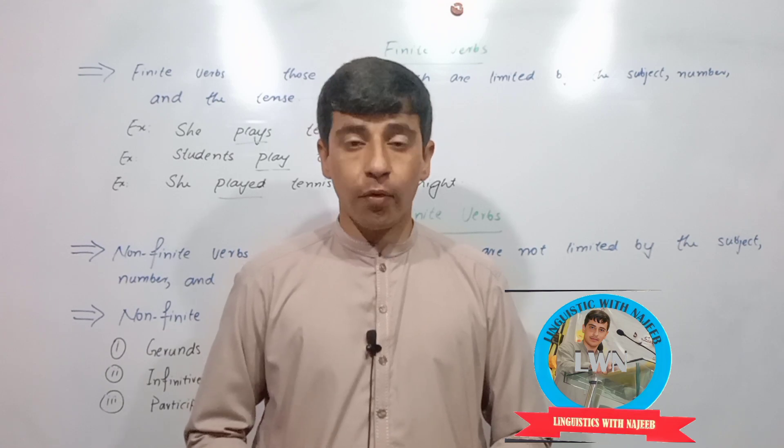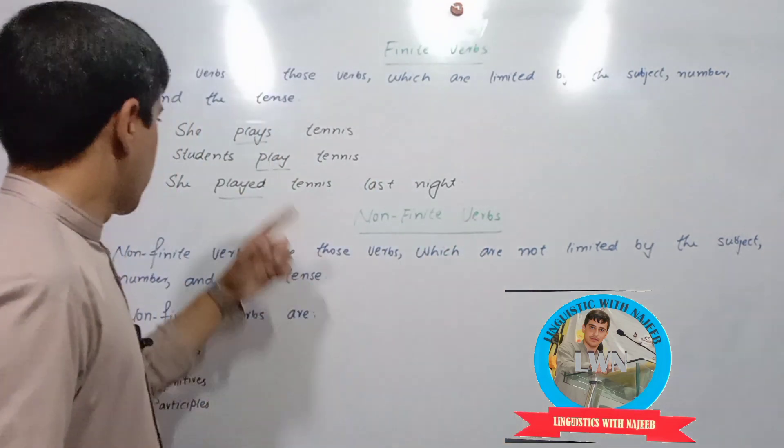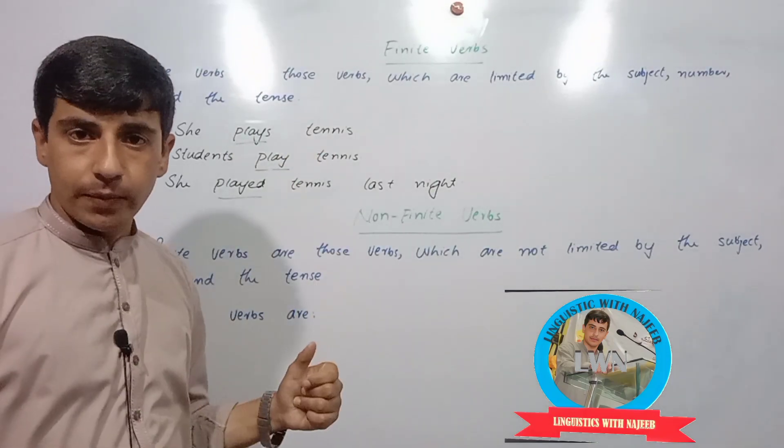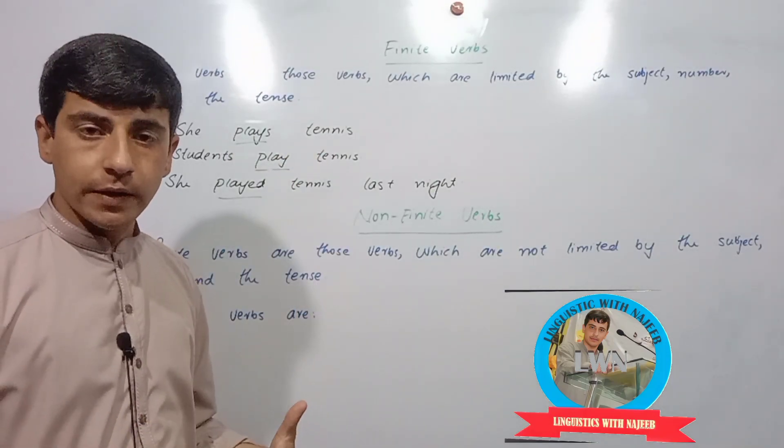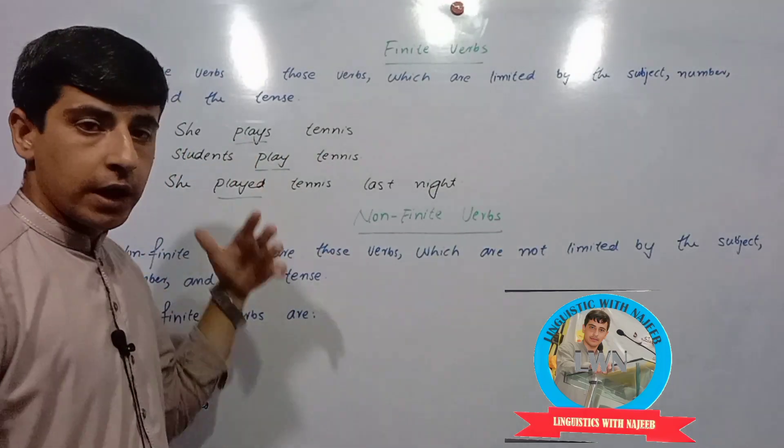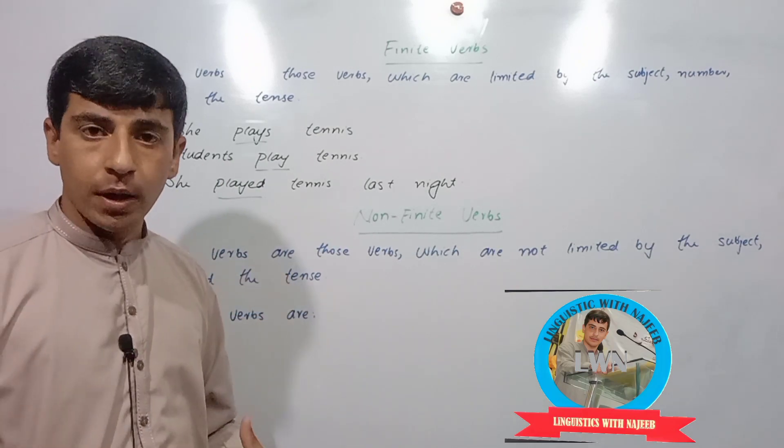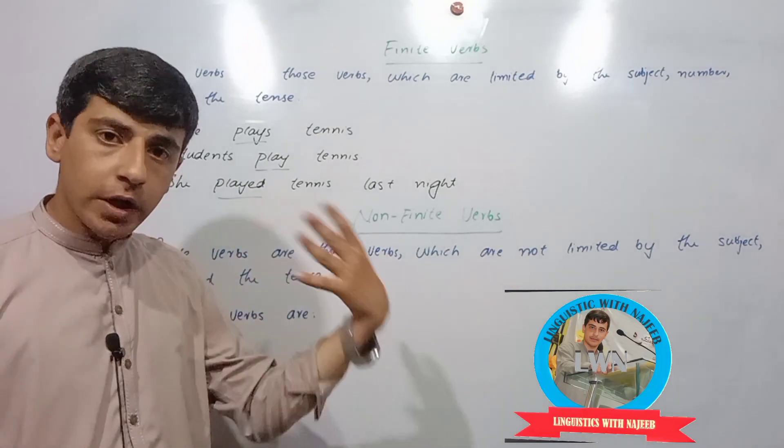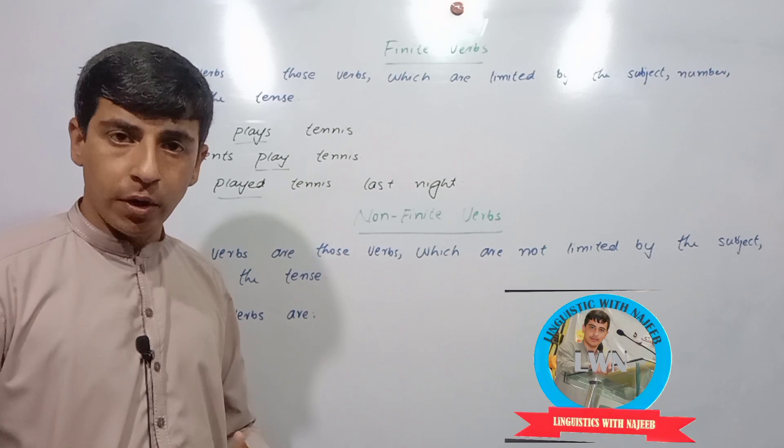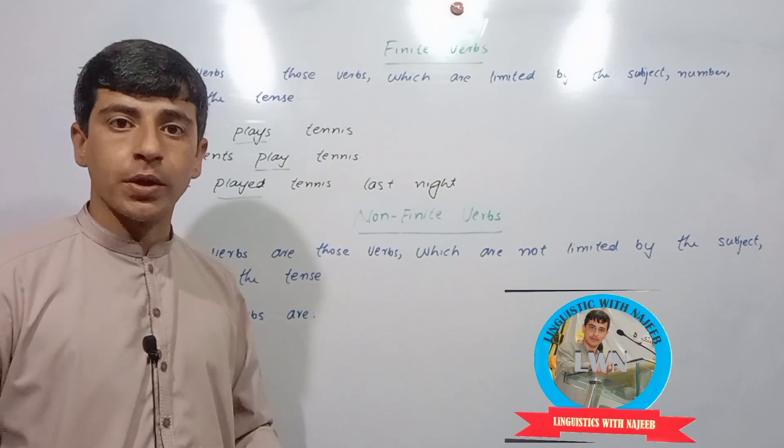For example, she plays tennis. In this sentence, plays is a finite verb because it changes according to the subject, according to the number, or according to the tense.